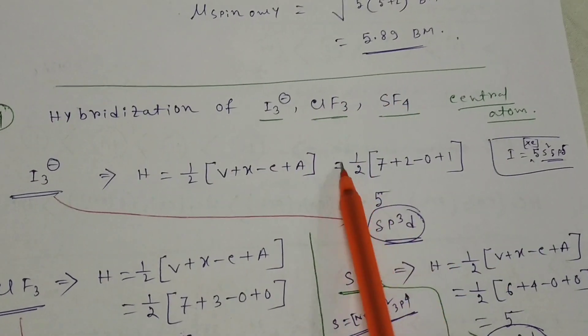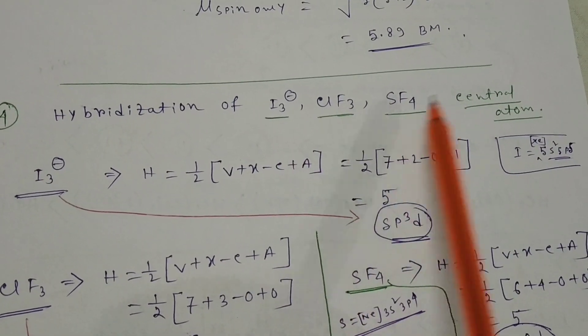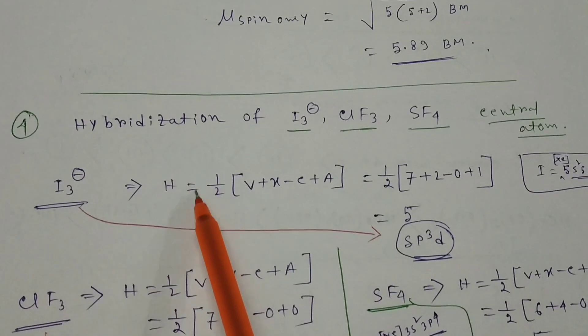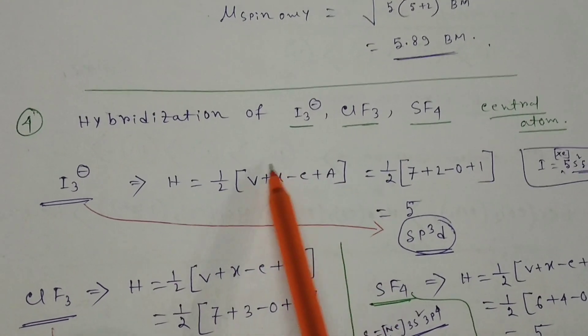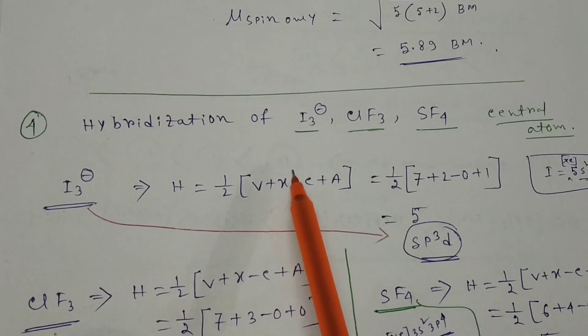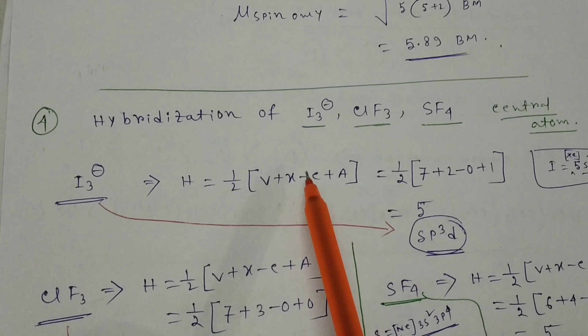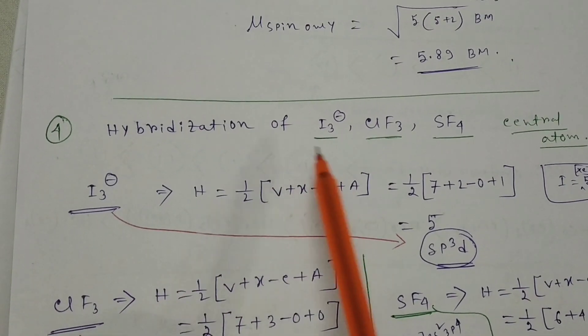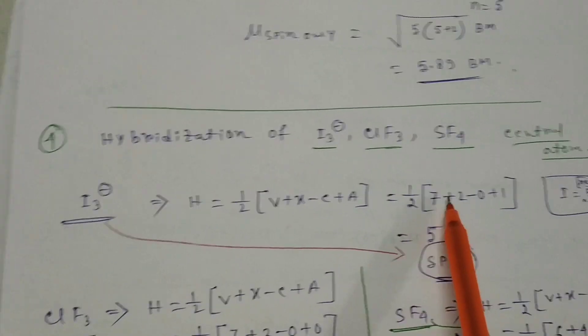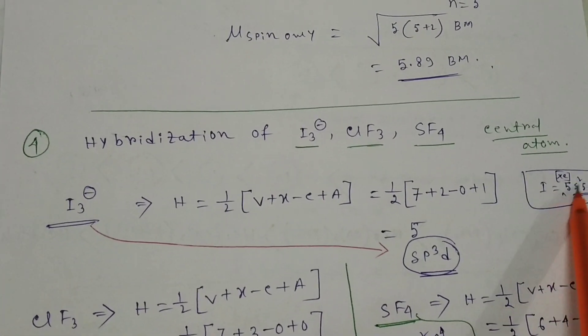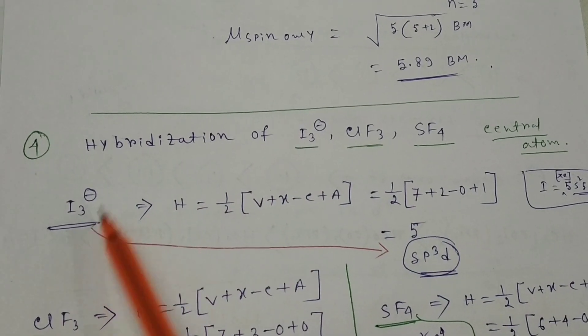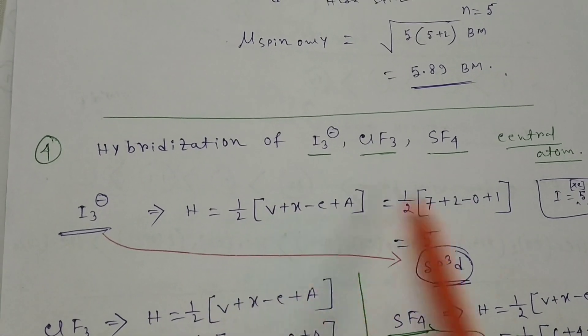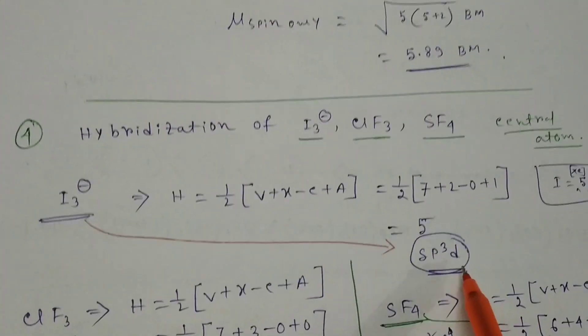The fourth question is hybridization for I3-, ClF3 and SF4. For the central atom, from hybridization VBT theory, H equals half times V plus X minus C plus A. V is valence electrons of central atom, X is monovalent atoms attached, C is cationic charge, A is anionic charge. For I3-, iodine has 7 valence electrons, plus 2 iodines attached, plus 1 anion. Total 5, so sp3d hybridization.